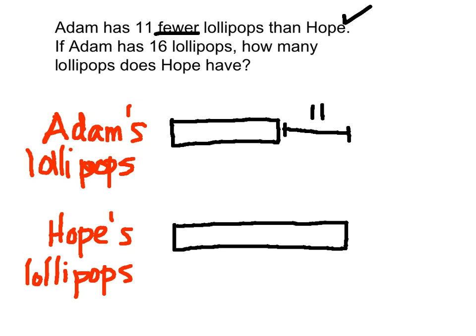Moving on to the next sentence. If Adam has 16 lollipops — comma, stop. If Adam has 16 lollipops, well, this bar right here represents Adam's lollipops, so that means this must be 16 lollipops. We can label Adam's lollipops as 16. Let's draw a length marker and call it 16. We did take care of that piece of information — if Adam has 16 lollipops, yes we did.